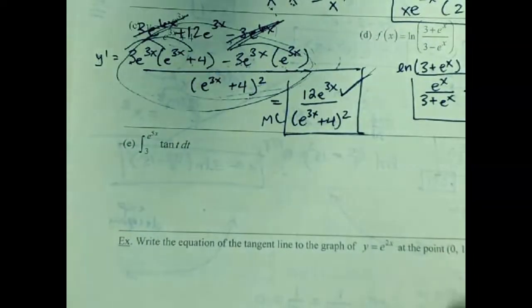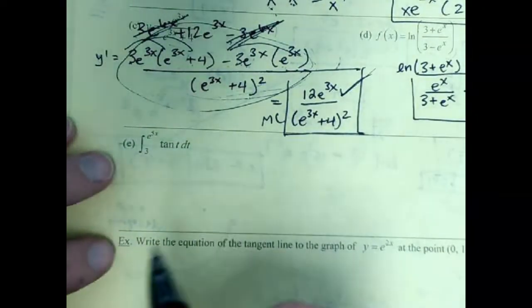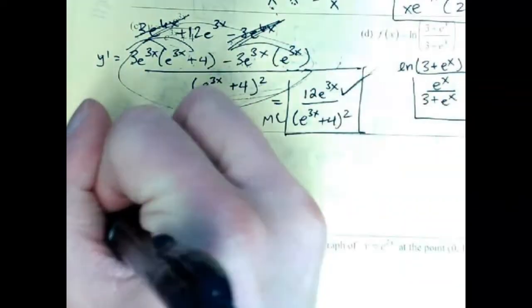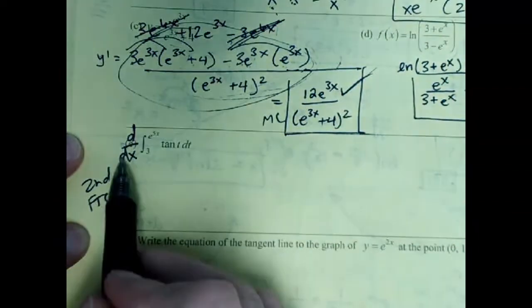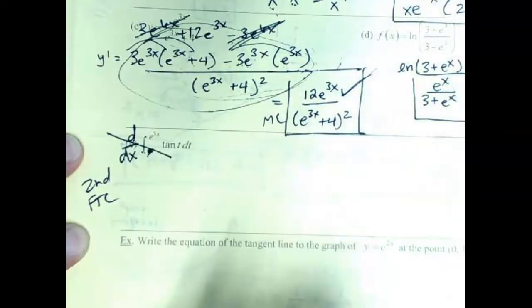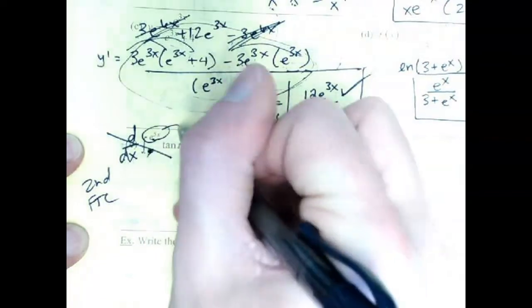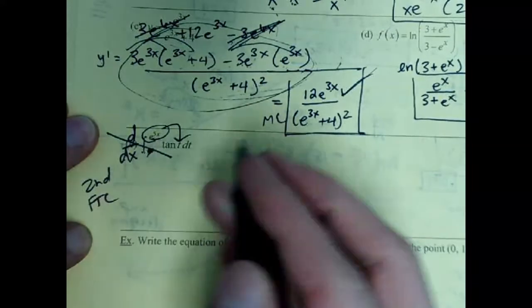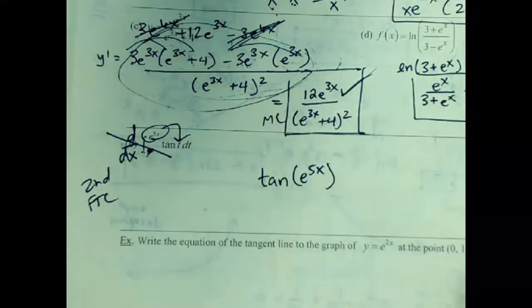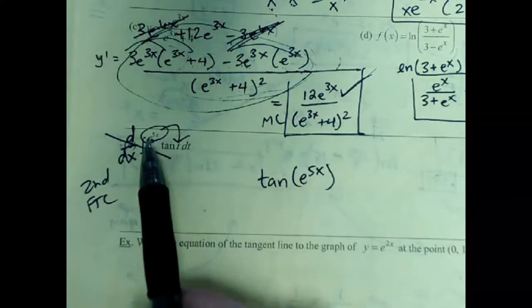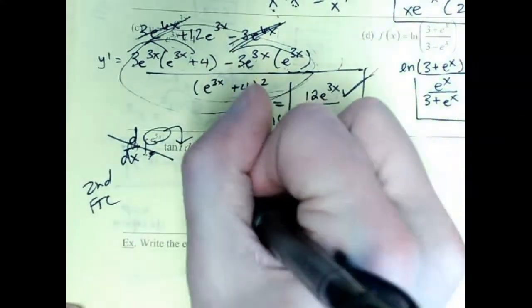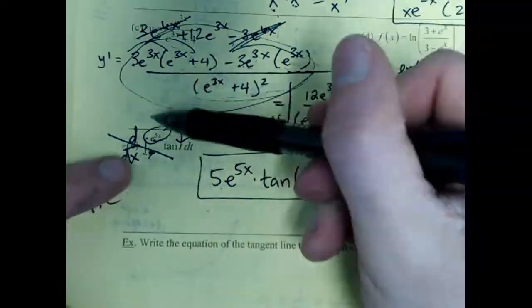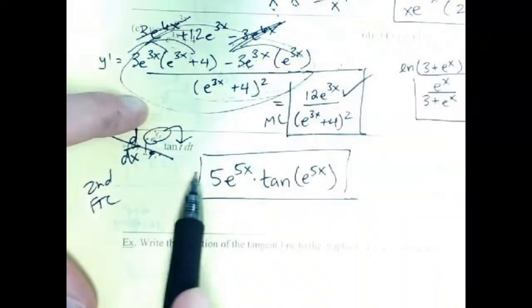The fifth one is a second FTC question — these sneak up quite a bit. When you take the derivative of an integral, the 3 at the bottom doesn't matter. Just take the integrand and plug in the upper bound everywhere you see t: tangent of e to the 5x. Then do chain rule because the derivative of e to the 5x is not 1 — a 5e to the 5x kicks out from the chain rule. If the bounds were switched, the only thing you'd need is an extra negative.